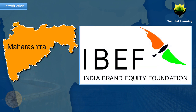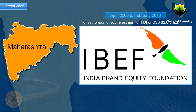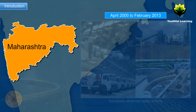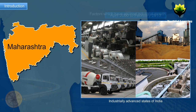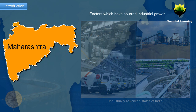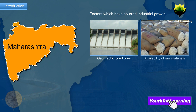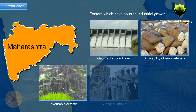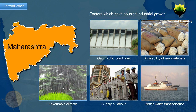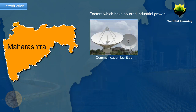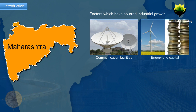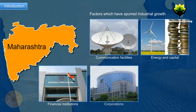According to a report from the India Brand Equity Foundation, Maharashtra attracted the highest foreign direct investment (FDI) of US dollars 62.8 billion from April 2000 to February 2013, making it one of the industrially advanced states of India. Factors which have spurred this growth are favorable geographic conditions, availability of raw materials, favorable climate, supply of labor, better water transportation and communication facilities, availability of energy and capital.